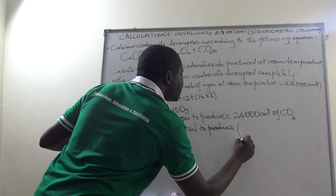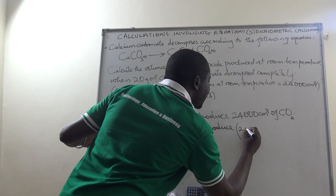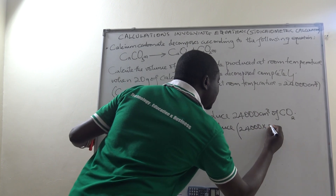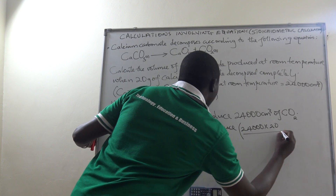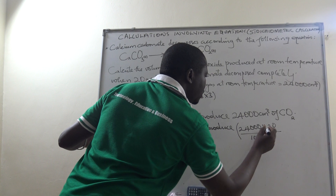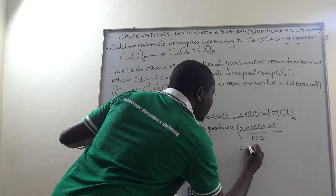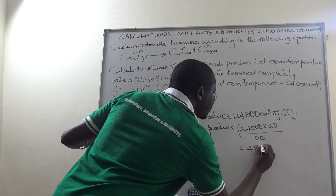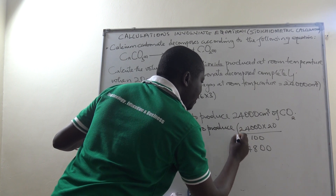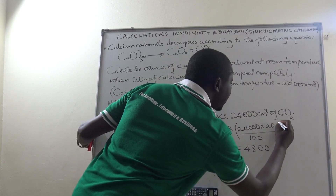We cross-multiply: this by that, divided by this. It becomes 24,000 times 20 over 100. Cancelling one zero from each, we get 4,800 cubic centimeters. The unit remains cubic centimeters.